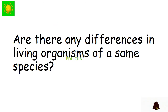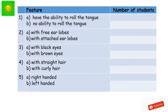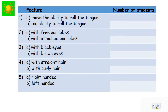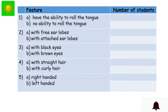Now, are there any differences in living organisms of the same species? You have to find out by doing a simple activity. You have to tabulate your answers. A table is provided with features and number of students. The first feature is: A — have ability to roll the tongue; B — no ability to roll the tongue. Likewise, you also check for attached earlobes and without attached earlobes.